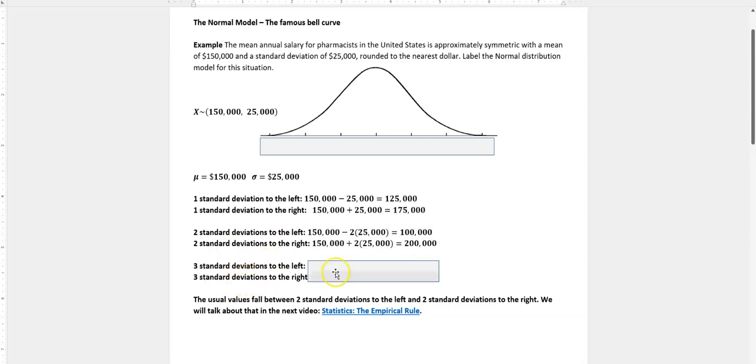And finally for three standard deviations, we would multiply that standard deviation times three, and that would take us all the way down to $75,000 and up to $225,000.